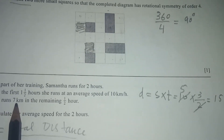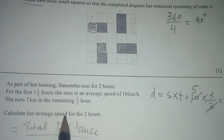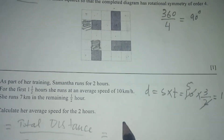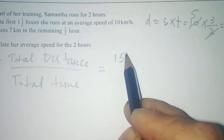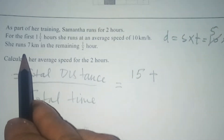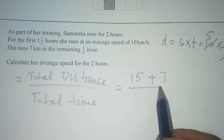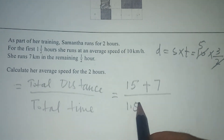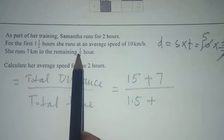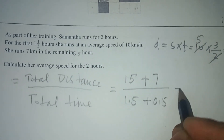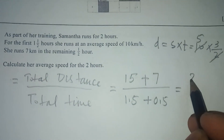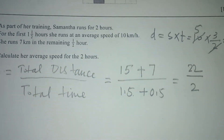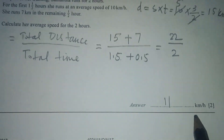Now we have full information to calculate the average speed for the whole two-hour journey. Total distance is 15 plus 7 equals 22 kilometers. Total time is 1.5 plus 0.5 equals 2 hours. So average speed equals 22 divided by 2, which is 11 kilometers per hour.